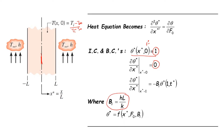At x-star equal to 1, the convective flux equals the conductive flux, and this gives the definition of the Biot number. Importantly, here we use L, not Lc — this is how we define the Biot number for spatial-effect problems. This definition is different from the previous Biot number definition.